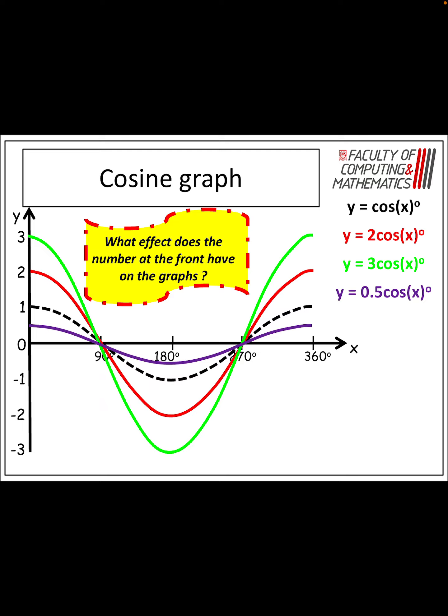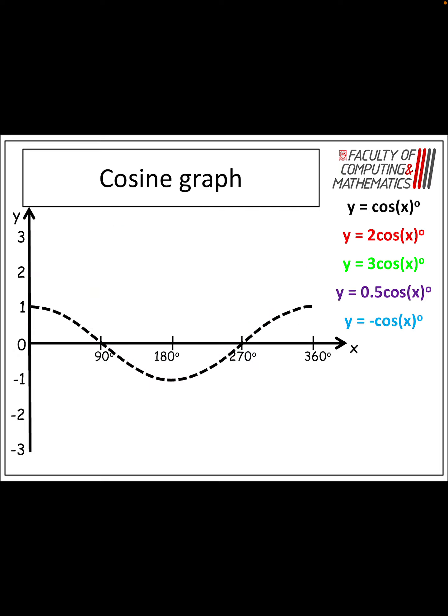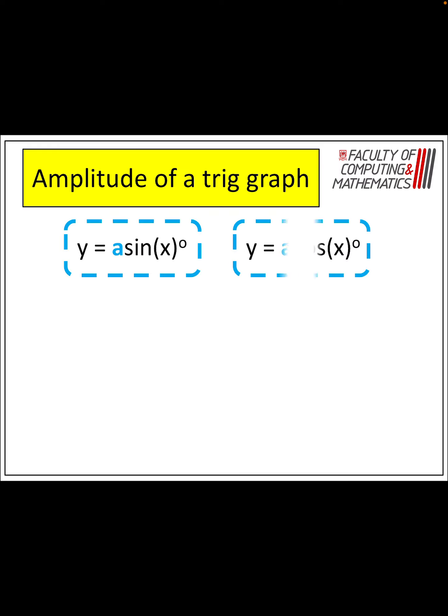So that's the effect the number at the front has on the graph — it either stretches or compresses it along the y-axis. And if you've got a negative in front, it flips it in that axis and turns it upside down. It doesn't affect the magnitude of the minimum and maximum values, but it does affect where they are — the maximum value is at 1 at 180, and the minimum is at negative 1 at 0 and 360 degrees.